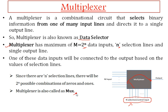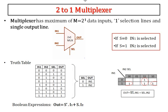Multiplexer is also called MUX in short. Now we will see the 2-to-1 multiplexer. It has 2 input lines and 1 output line. 2 input lines means 2 power 1, so there is 1 selection line — following the rule of 2 power n input lines and n selection lines.